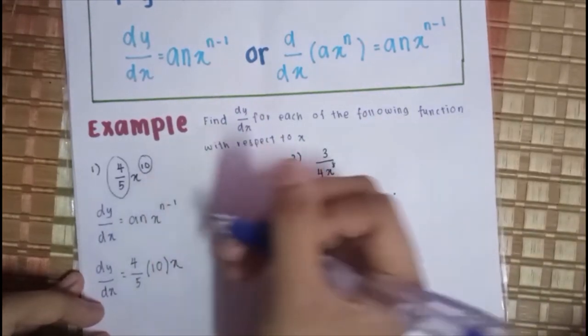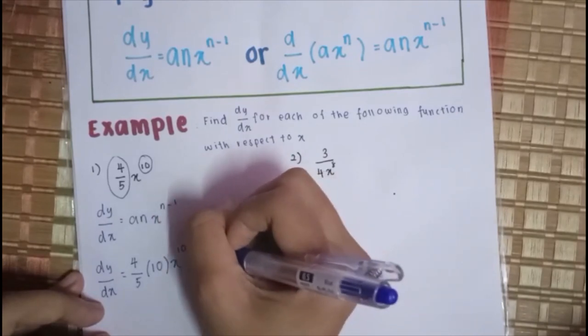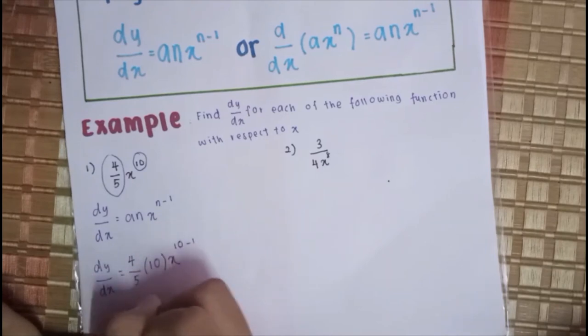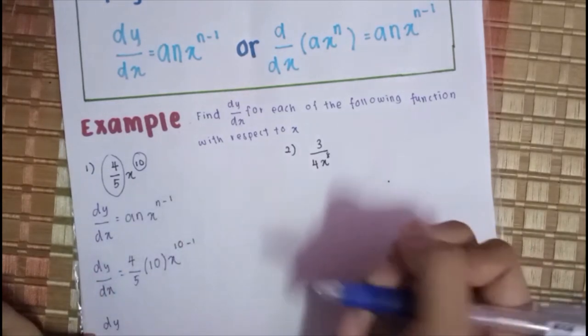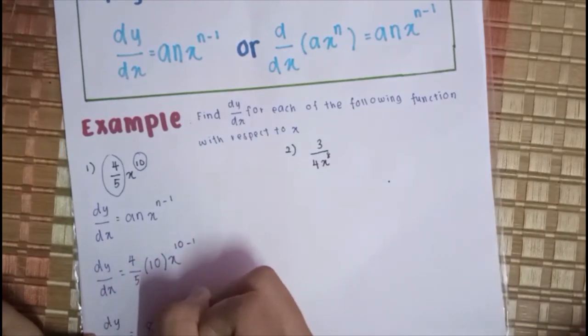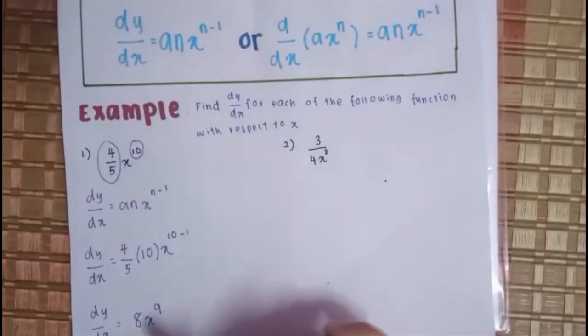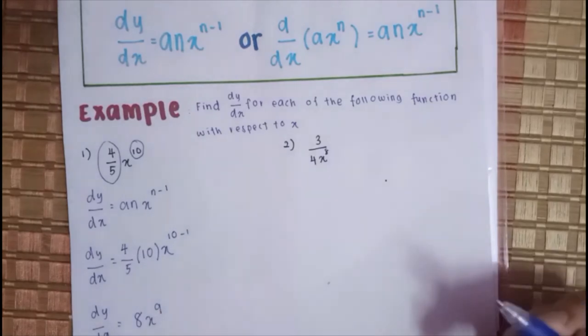N tadi apa? 10 kan? Kita tulis sini 10 tolak 1. DY per DX, 10 darab 4 per 5 dapat 8X, 10 tolak 1 jadi 9. Itu contoh yang pertama. Kita dah dapat jawapan 8X kuasa 9.